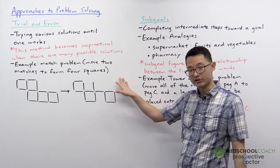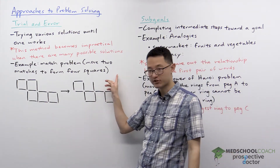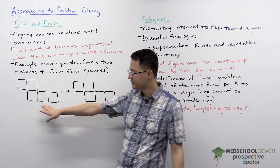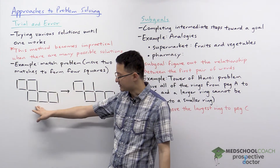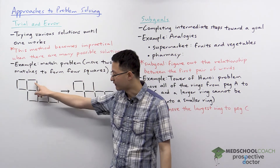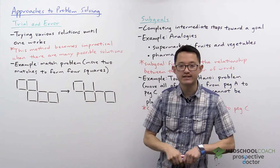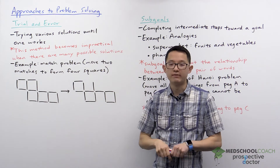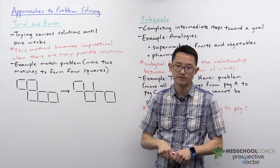To illustrate trial and error, let's take a look at the match problem. You're presented with 16 matches in this setup. You can see there are five squares. Your task is to move two matches to form exactly four squares.